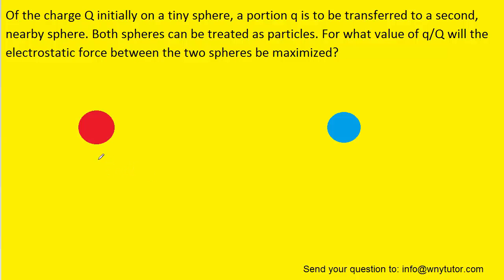So here we have two nearby spheres. We can assume in the beginning that the amount of charge on this sphere is capital Q and the charge on this sphere is zero. But we're then going to remove an amount of charge equal to lowercase q and take it and put it onto this charge. So this charge ends up having that lowercase q charge.